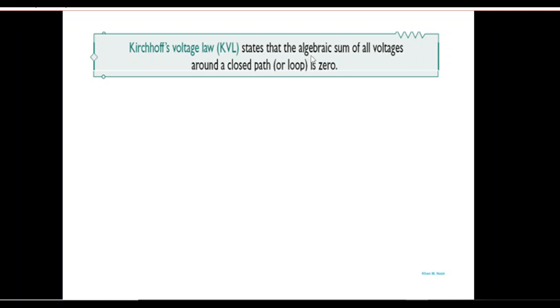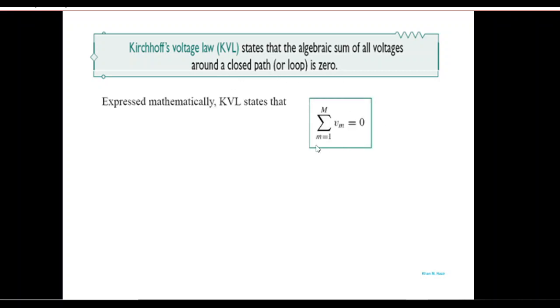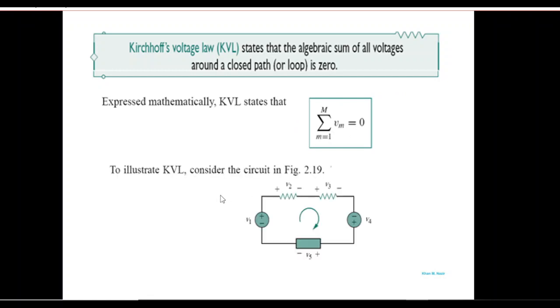KVL states that the algebraic sum of all voltages around a closed path is zero, and mathematically, the sum of all voltages is equal to zero. If you look at this circuit, there is a voltage source and voltage drops here, here, here, here, and here — the sum of all these voltages should be equal to zero. This is what KVL states.